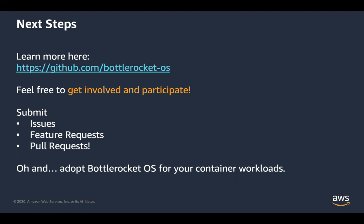BottleRocket OS is technically a full-blown OS — it is a full Linux distribution. It comes with all the necessary components, binaries, and libraries you need to run your containerized workloads. The difference is it's not a general purpose OS that includes everything needed to run basically any workload. The point of BottleRocket OS is to tighten up security, minimize the footprint, and focus on running containerized workloads for that specific purpose.